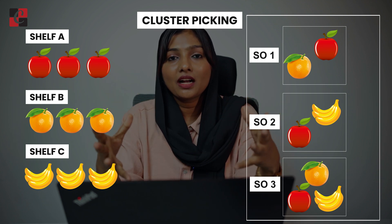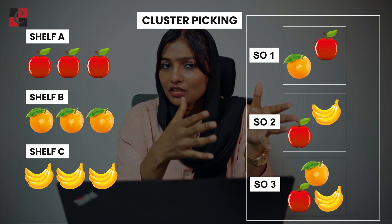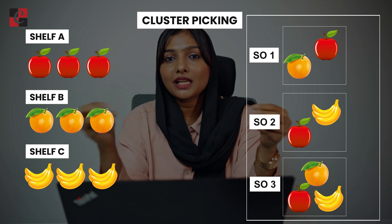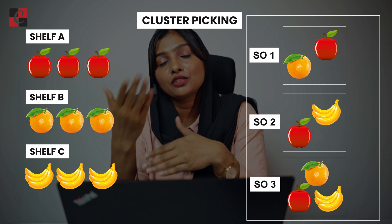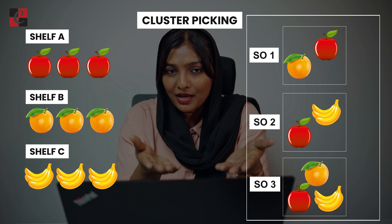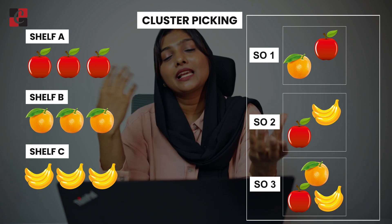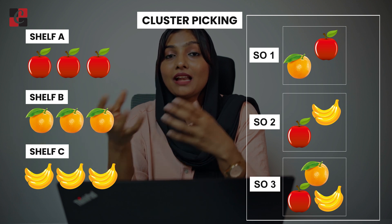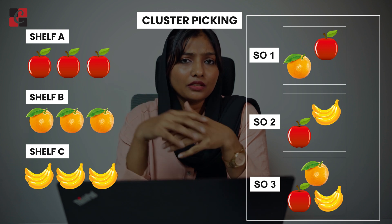The picker will use a cart with three empty packages. The picker navigates to shelf A, picks apples and places them in each sale order — sale order 1, 2, and 3. Then the picker navigates to shelf B, picks the orange and places it in sale order 1 and sale order 3. Then the picker navigates to shelf C, picks the banana and places it in sale order 2 and sale order 3.